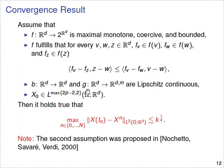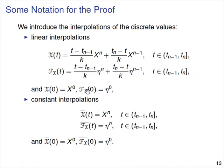For the proof we set up some notation. We take the numerical solution x_n and put it on the entire temporal interval using a linear interpolation: a function that is x_{n-1} at t_{n-1} and x_n at t_n, with linear interpolation in between. We do the same for η and call it fx. We also define a constant interpolation: on the interval between t_{n-1} and t_n, the function x-overline equals x_n. We do the same for η and denote it fx-overline.